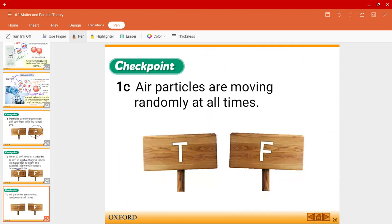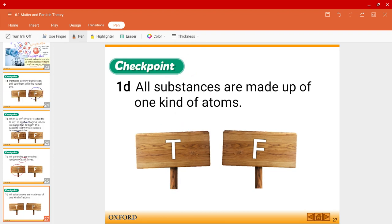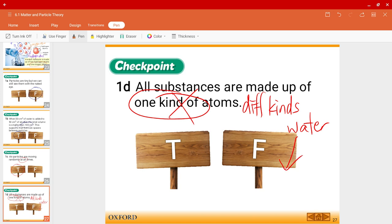And see, question C. Air particles are moving randomly at all times. Yes, that is also true. And finally, question D. All substances are made up of one kind of atoms. Is that true? Is there only one kind? No, that is not true. Of course, there could be different kinds. Just now, as I showed you earlier, water molecules, it has hydrogen atoms and oxygen atom. So, you can see over here, there are two different kinds for a water molecule. So, the answer is false.